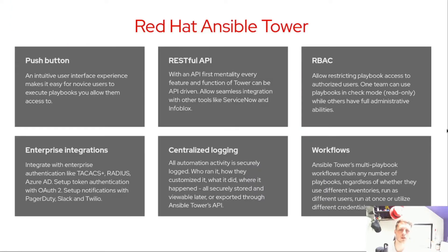Red Hat Ansible Tower has a lot of key features that differentiate it from just using Ansible engine in the command line: push button automation so you can start a job at the push of a button; a RESTful API allowing you to integrate Ansible Tower within existing areas of your infrastructure or pipeline; role-based access control to control exactly who has access to what, when and where; enterprise integrations with OAuth 2 or notifications such as Slack; centralized login; and of course workflows.